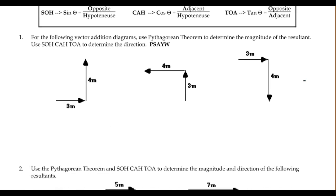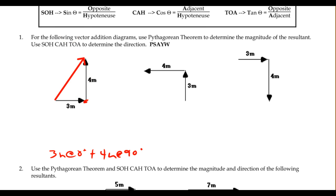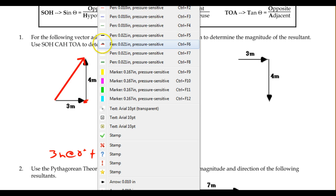Here we have three triangles that have a lot in common. We're adding two vectors: a 3-meter vector at 0 degrees plus a 4-meter vector at 90 degrees. They've been placed head to tail, and the resultant will be a straight line from where I started to where I finish, forming the hypotenuse of a right triangle.